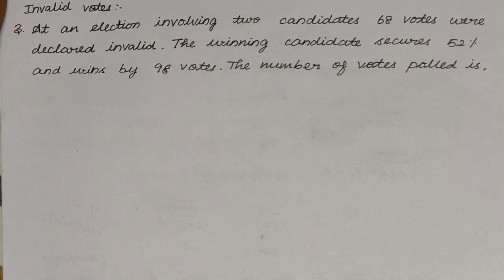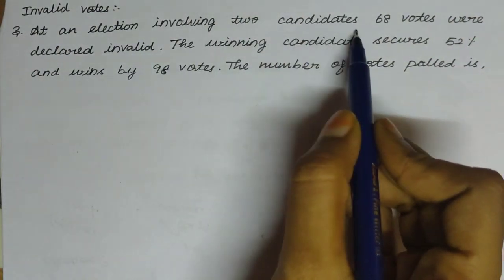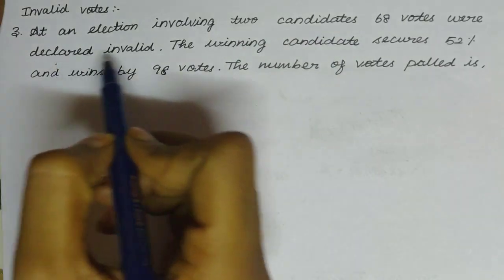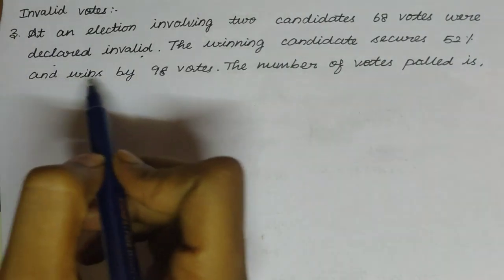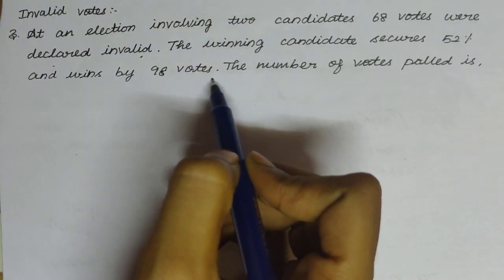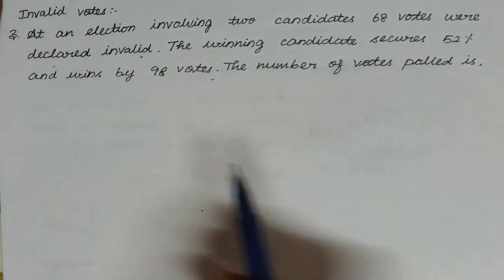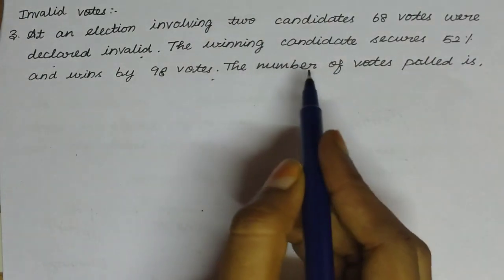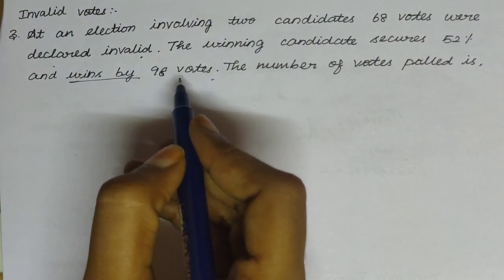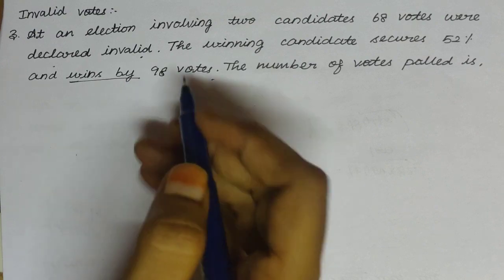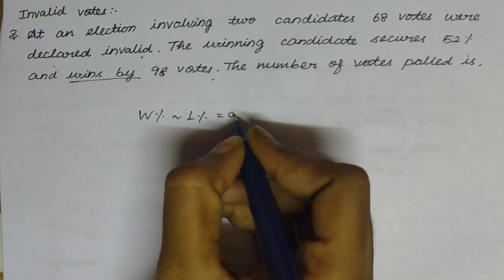Third question: At an election involving two candidates, 68 votes were declared invalid. The winning candidate secures 52% and wins by 98 votes. The number of votes polled is — this is the total number of votes. Winner minus loser percentage is equal to 98 votes.